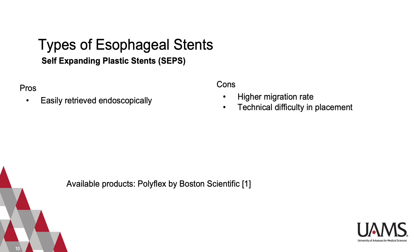The other most commonly used products are self-expanding plastic stents. These are most often made of a dual-layer polyester mesh externally with an embedded silicone layer internally. Advantages to these stents are that they are easily retrieved endoscopically, but they have a higher migration rate and are technically more difficult to place. An example of an available plastic stent is the PolyFlex product by Boston Scientific.